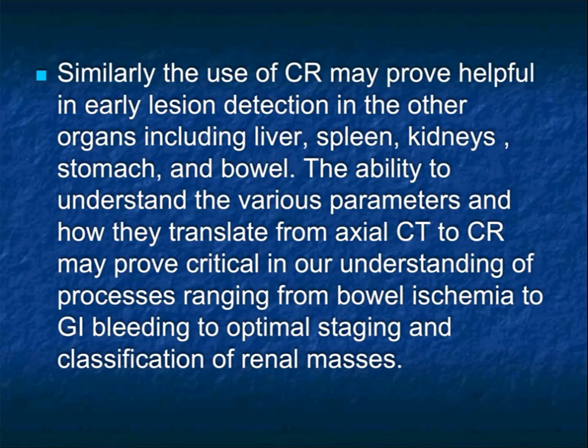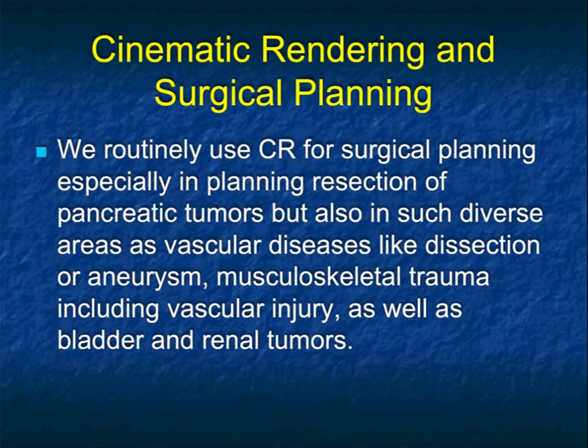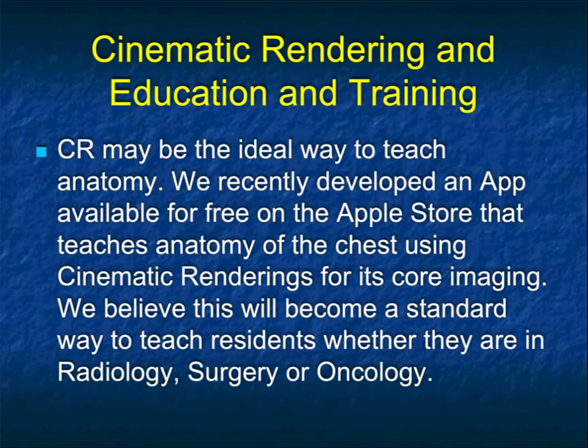The use of cinematic rendering may prove helpful in early detection of other organs — I mentioned the pancreas, but also the spleen, liver, and kidneys. The key is how we can understand what the cinematic rendering is doing and how we can control the various parameters to get some certainty. Our surgeons love cinematic rendering for surgical planning, whether it's in the GI, vascular, or musculoskeletal system. The more complicated the case, the better it is for cinematic rendering.